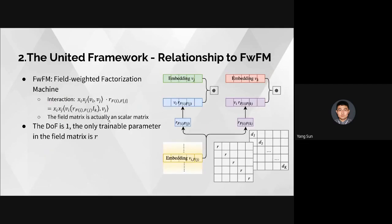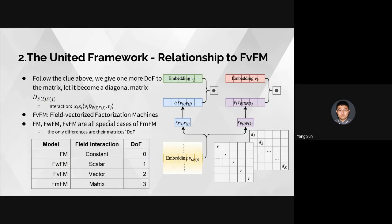We use this framework to explain field-weighted factorization machine (FWFM). In FWFM, the field matrix is a scalar matrix where the diagonal is all scalar r, so the degree of freedom is one. Following this clue, we give one more degree of freedom to the matrix and let it be a diagonal matrix D — we name this field-vectorized factorization machine (FVFM). So FM, FWFM, FVFM are all special cases of FM-Square, differing only in their matrix degree of freedom: zero, one, two, and three respectively.